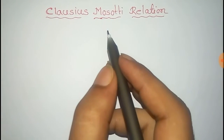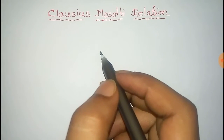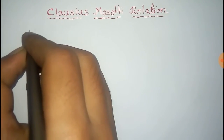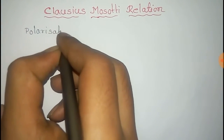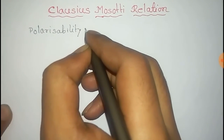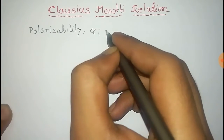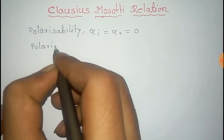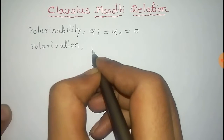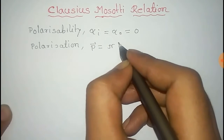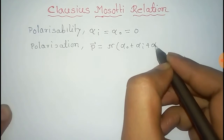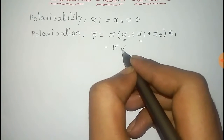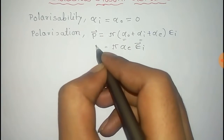In this video we'll prove the Clausius-Mossotti relation. Here we only consider the elements for which the polarization solely depends on the electronic polarizability only. The other polarizabilities — ionic (α_i) and orientational (α_o) — are equal to zero. We know that the polarization P equals n times (α_o + α_i + α_e) times the electric field, and since α_o and α_i equal zero, P equals n·α_e·E_i.